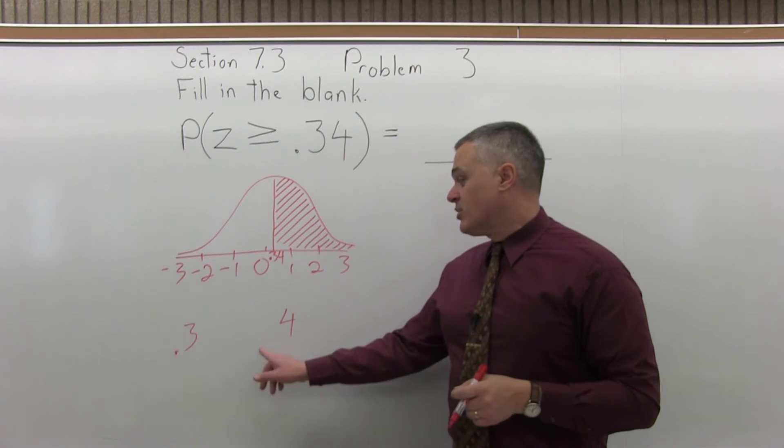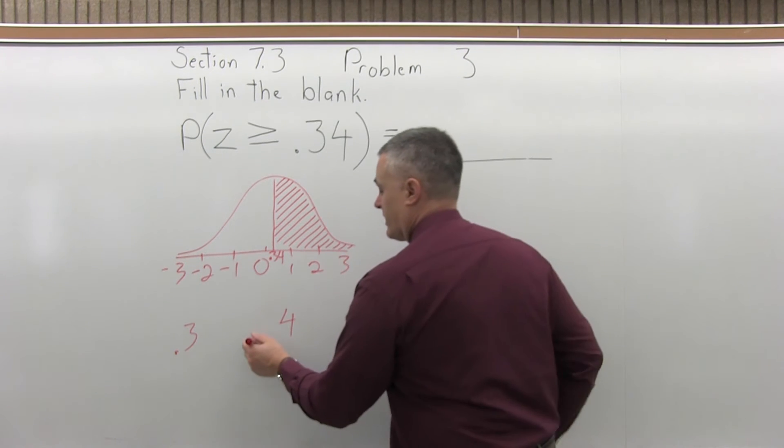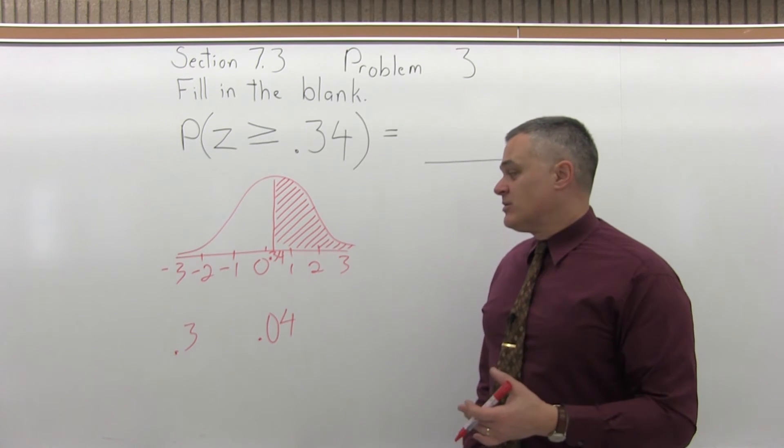The third step in that process is to put a .0 in front of the rightmost digit that we pulled off, so the 4 gets written as .04. And now we go to that standard normal chart.